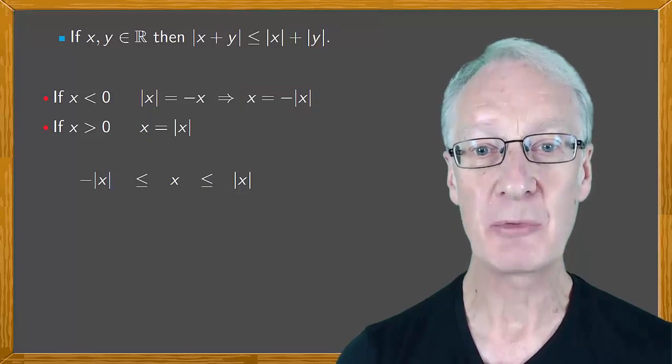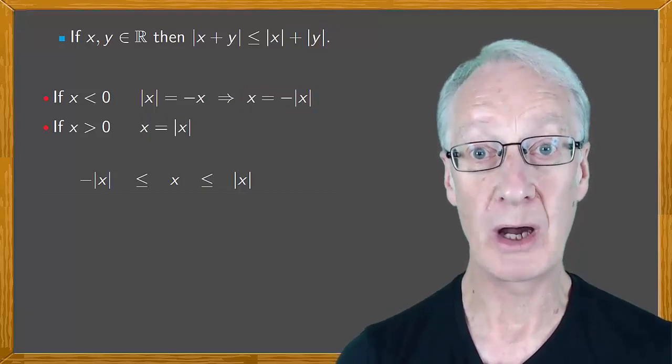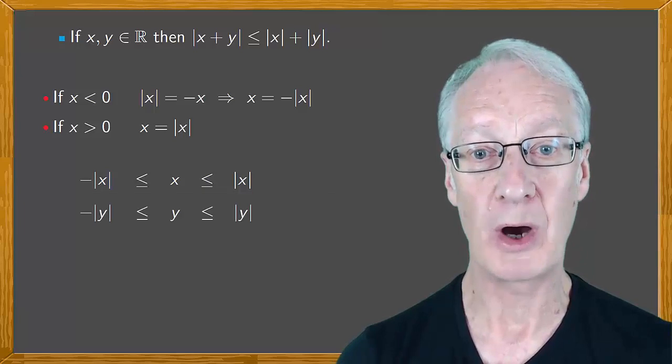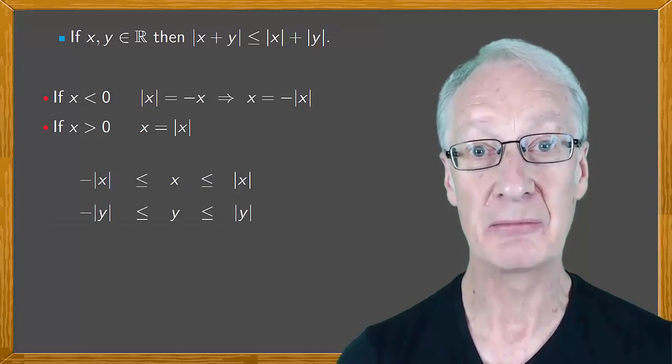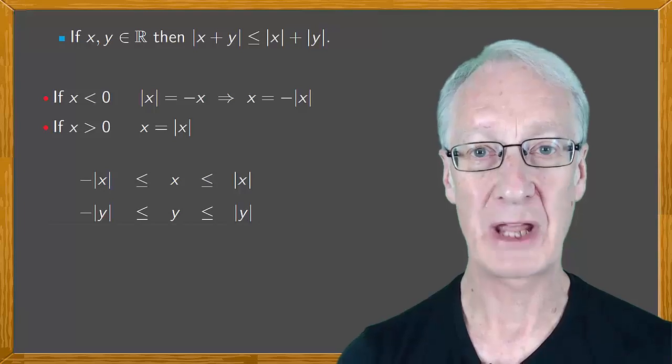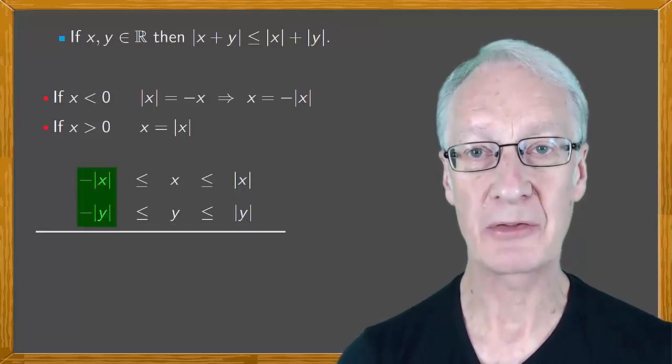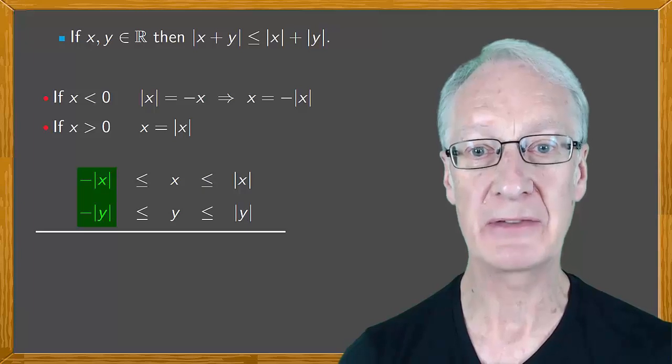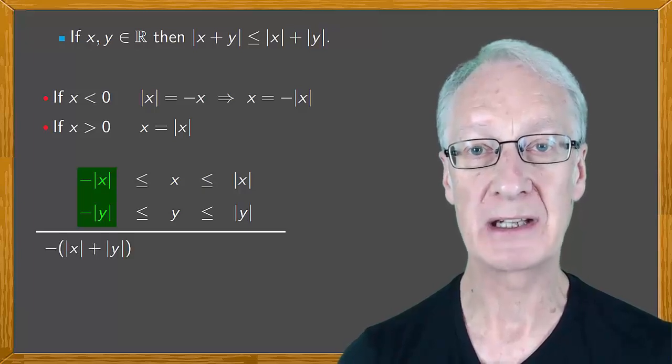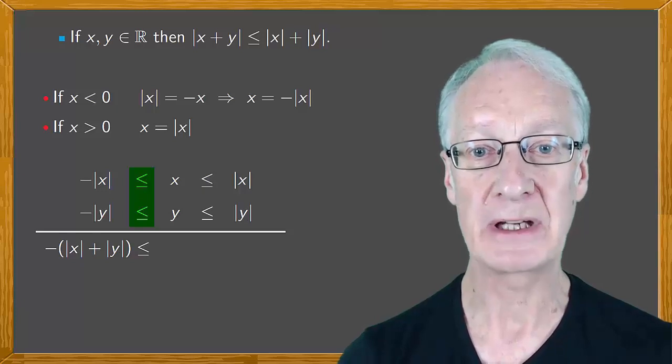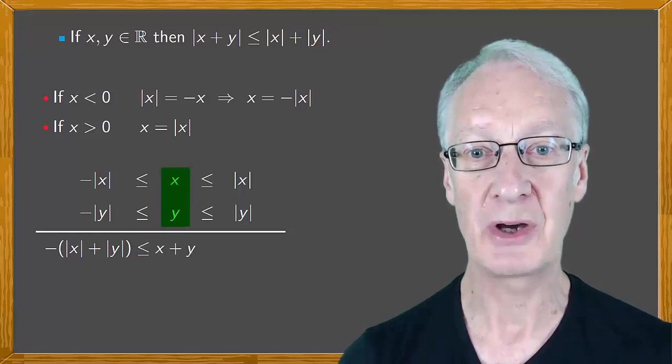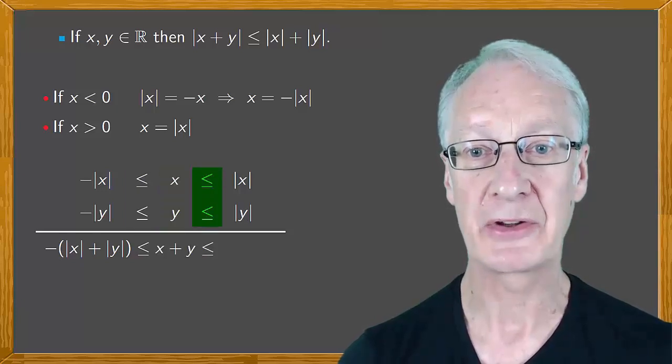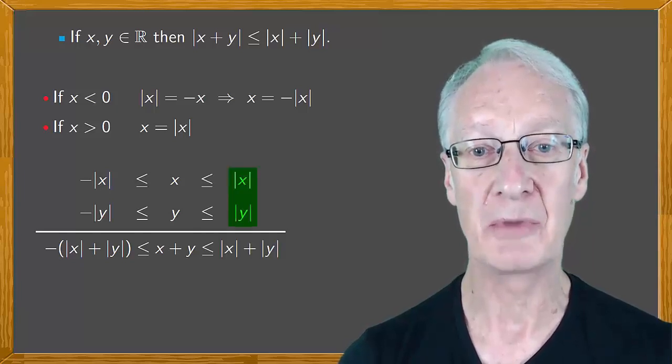If we reason the same way with another real number, y, we obtain that y is between minus mod y and mod y. Now, if we add these two inequalities, we can take out the common factor of the minus, giving us minus bracket mod x plus mod y is less than or equal to x plus y, which is less than or equal to mod x plus mod y.